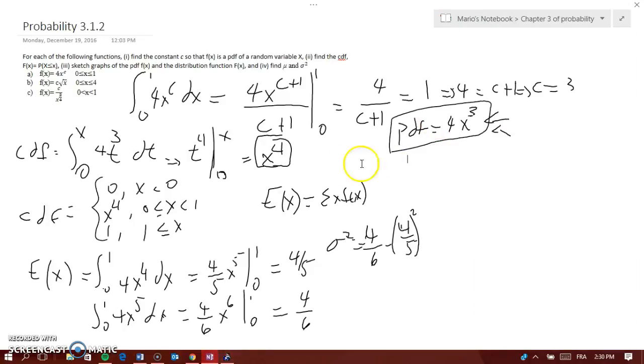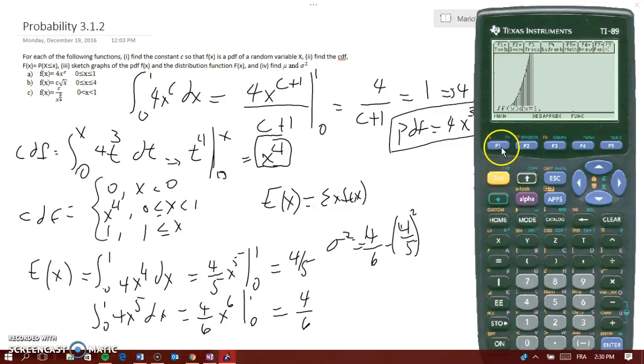Now we have to find the graph of the CDF. And the CDF is x to the power of 4, so we will go again here, F1, green button F1. I'm going to erase that and just put x to the power of 4, and then click enter and graph. Now we can go in F5, number 7 again, from 0, enter, 1, enter.